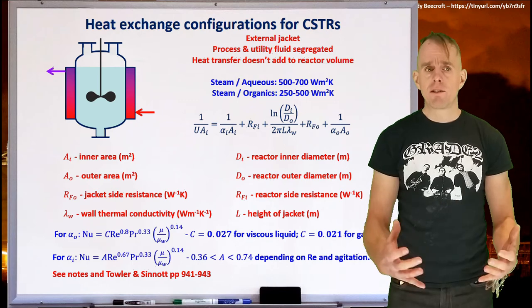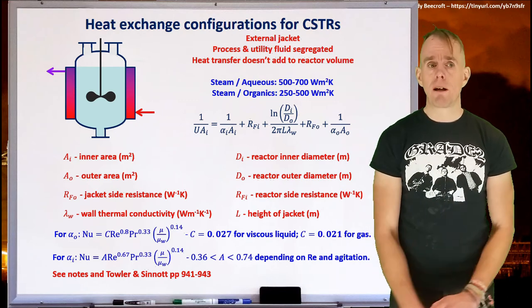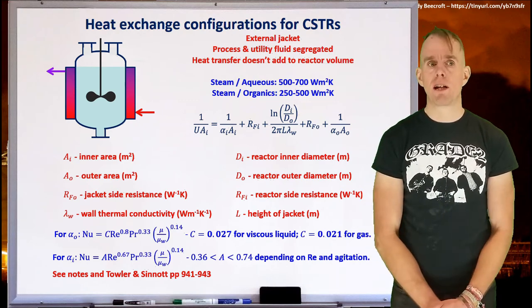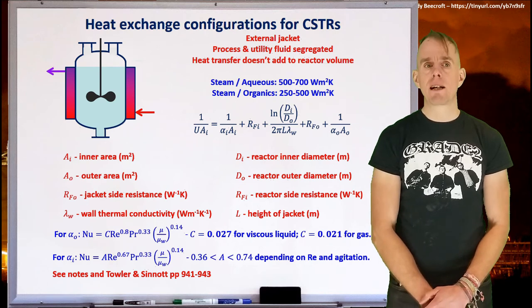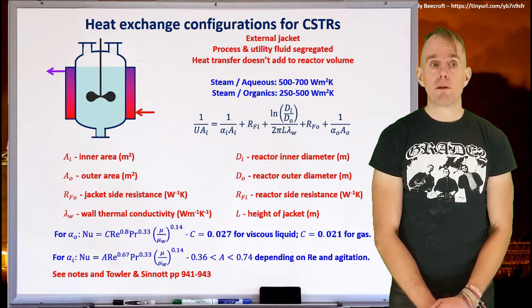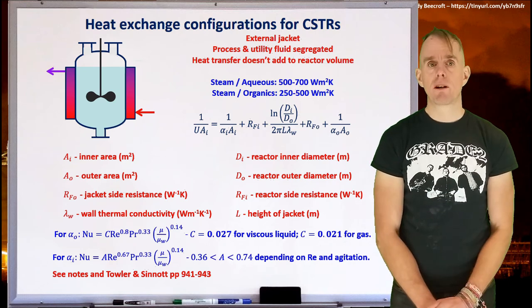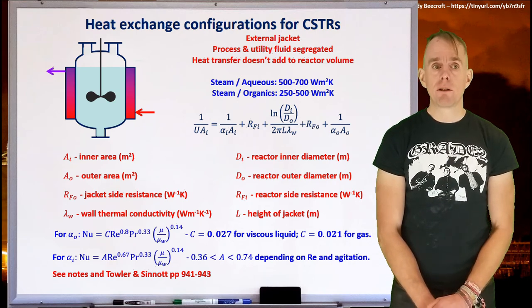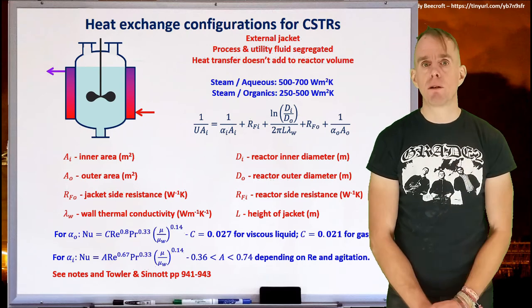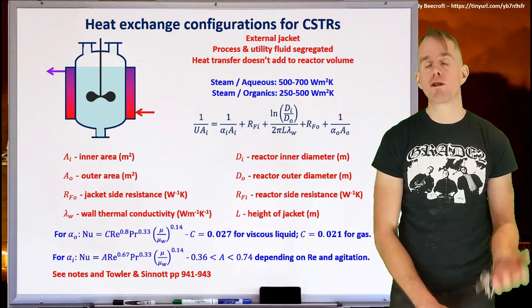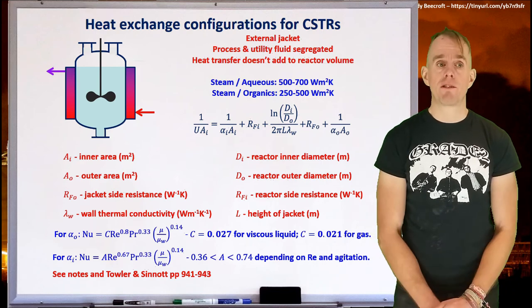If you've got an agitated system, again, different correlations will apply. And I've put a second Nusselt number correlation here on the board for you that allows you to calculate the inner film resistance due to a stirred tank. There's a lot more of these correlations in the literature. And if you look at Towler and Sinnott's excellent book on chemical engineering design, pages 941 to 943, you'll see far more listed.